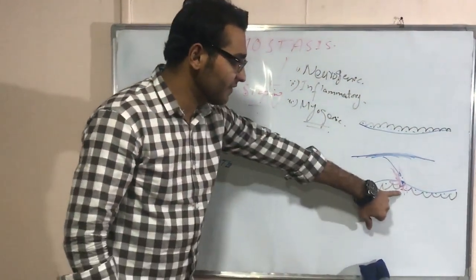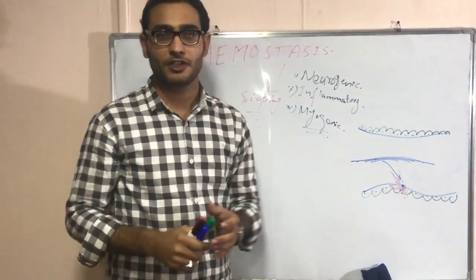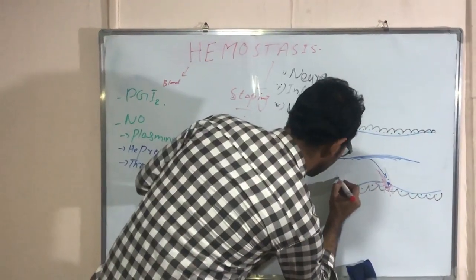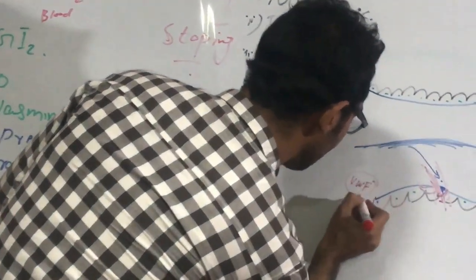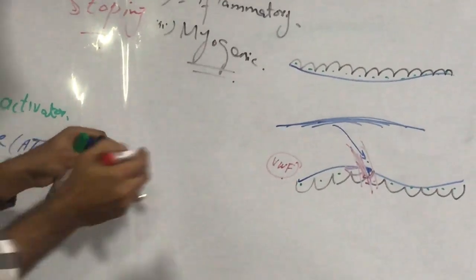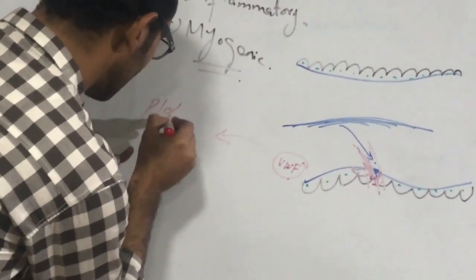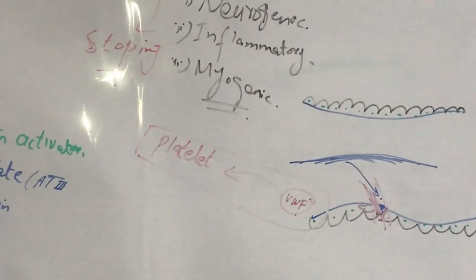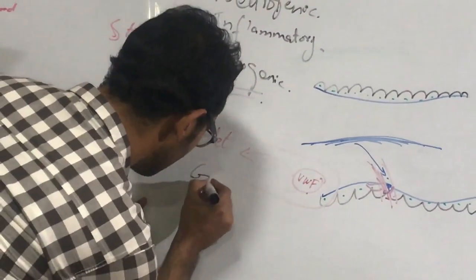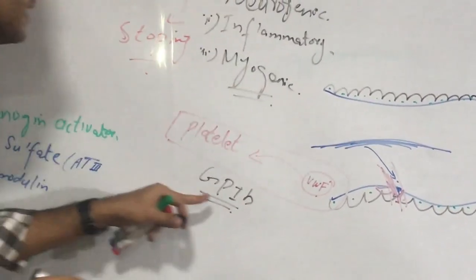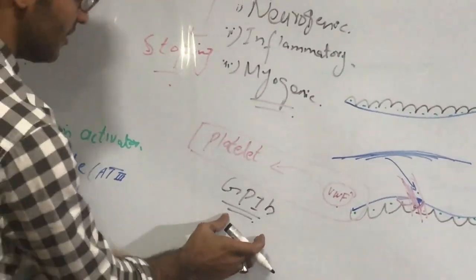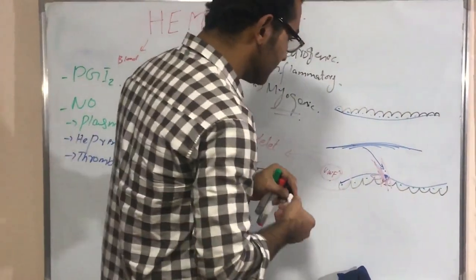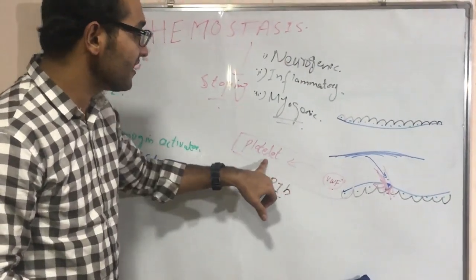When the endothelial membrane is damaged, the endothelial cells secrete Von Willebrand factor. Von Willebrand factor binds first to the platelet. For Von Willebrand factor to bind with the platelet, a protein called GP1B is needed. If there is a deficiency of GP1B, Von Willebrand factor cannot bind, and adhesion of the platelet will not occur.